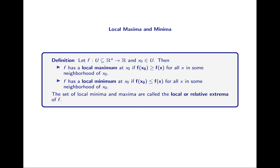Let's define what a local maximum and a local minimum are. A local maximum is a maximum in a neighborhood of that point, and a local minimum is a minimum in a neighborhood of that point. We define a neighborhood as anything that contains an open ball centered at x0, so x0 is necessarily in the interior of the neighborhood.